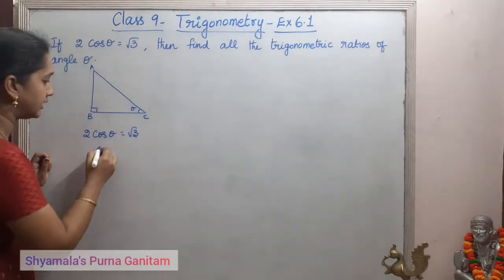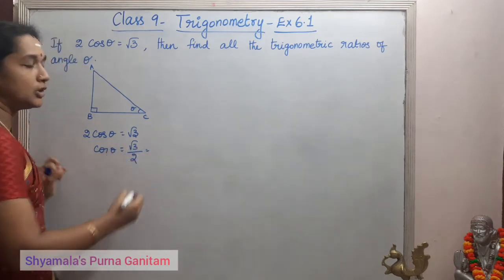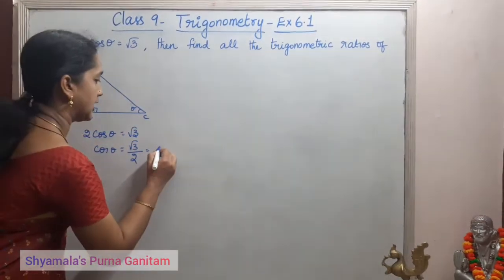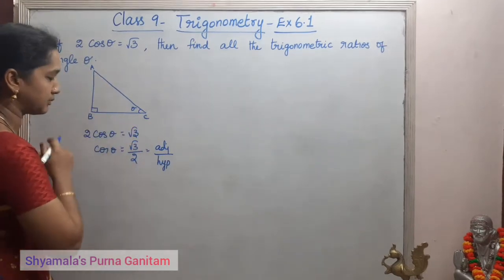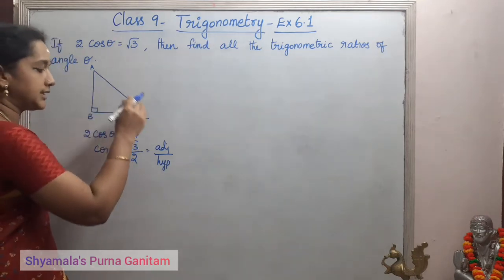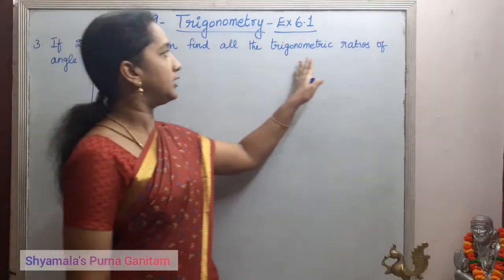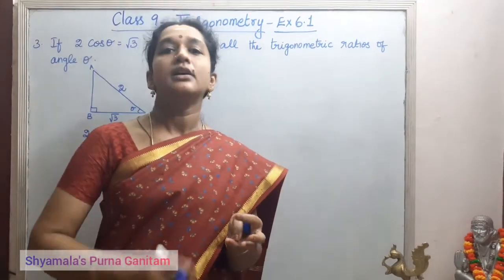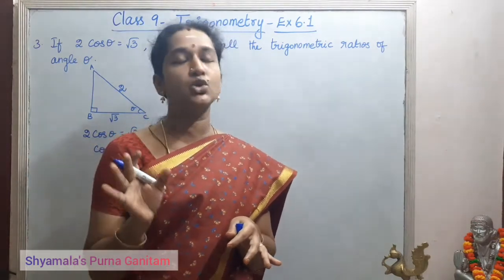We can rewrite it as cosθ = √3/2. We know that cos is adjacent by hypotenuse. So for θ, the adjacent side is BC, and that value is given as √3. The hypotenuse is AC, and that value is given as 2. We are asked to find all the trigonometric ratios — sine, tan, cosecant, secant, and cot.